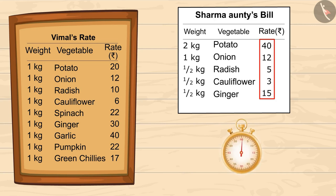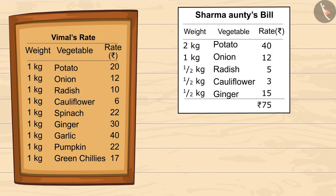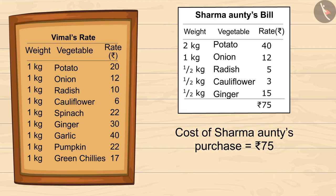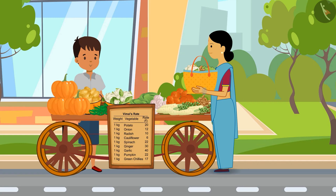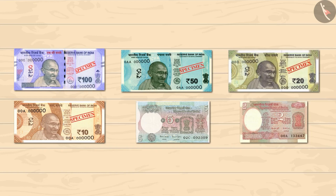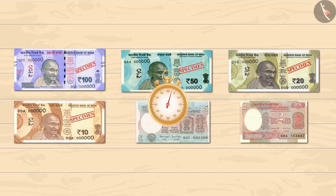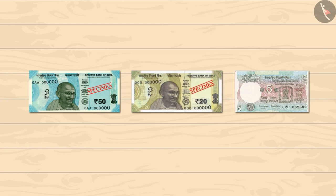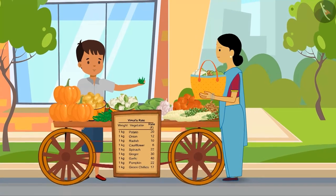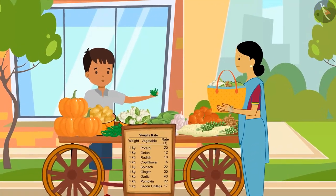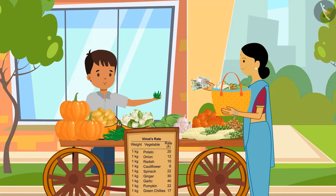Kids, you can pause the video to find out the sum. Vimal has already added all the numbers — is your total also 75 rupees? Sharma auntie has to give 75 rupees to Vimal. Some notes have been placed in front of you — let's help Sharma auntie add up the total price. You can use each note only once. Look, Vimal is giving some green chilies to his aunt for free!